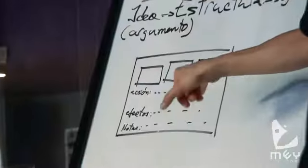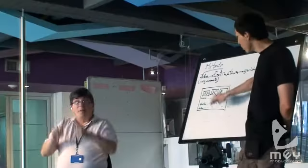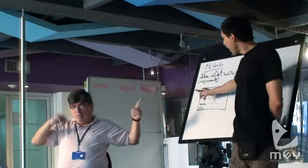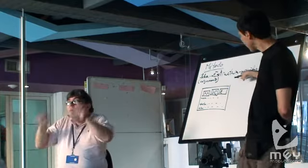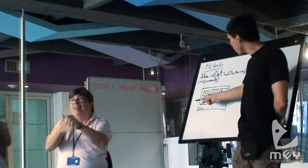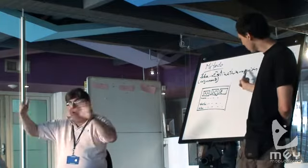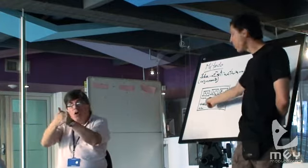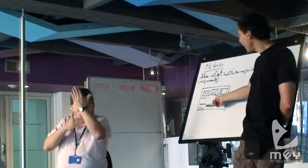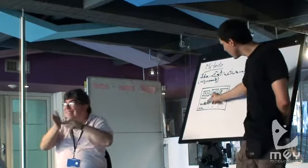Este es un ejemplo de un storyboard. Aquí dibujaría la acción. Esta es una manera gráfica y escrita de poder contar el guión, en el que pueden ustedes poner tanta información como quieran. Pueden escribir la acción del guión, pueden mostrar la acción del guión, pueden poner los efectos, el vestuario, las luces, todo lo que quieran: el guión técnico, todo lo pueden escribir aquí.